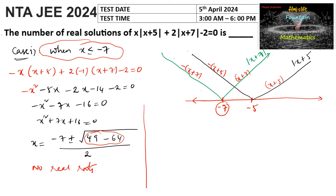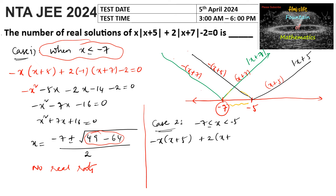Case 2: when x lies between negative 7 and negative 5, including negative 7 and excluding negative 5. In this region, x plus 7 is positive and x plus 5 is negative. So mod of x plus 5 becomes negative of x plus 5, and mod of x plus 7 remains positive as x plus 7.